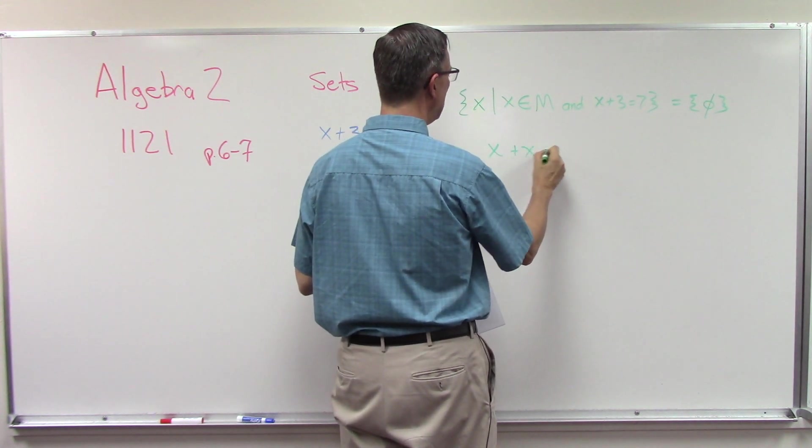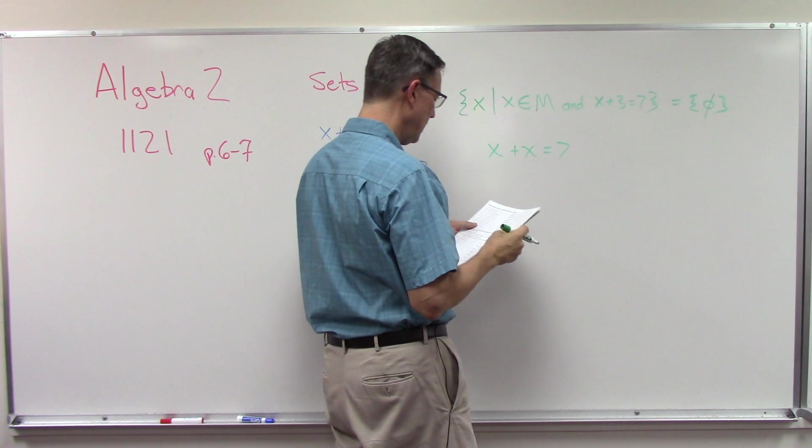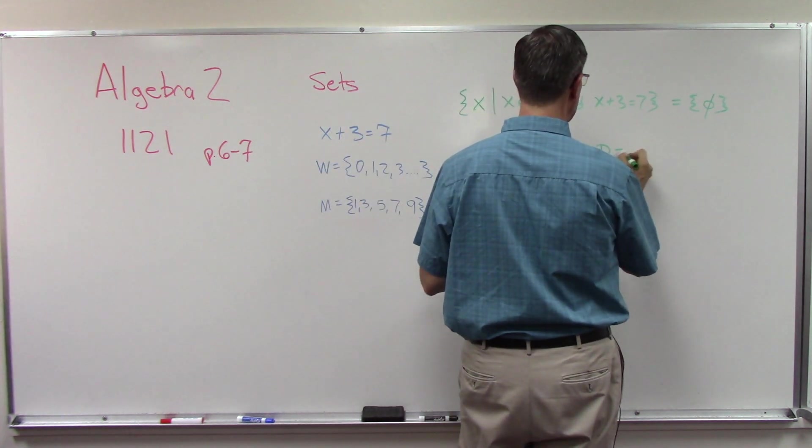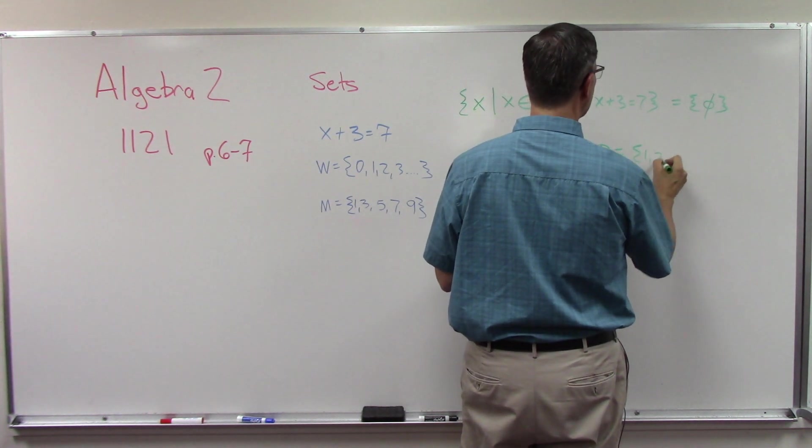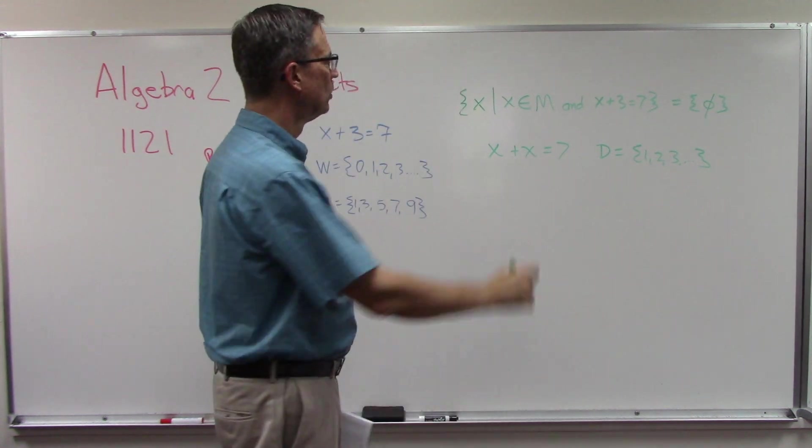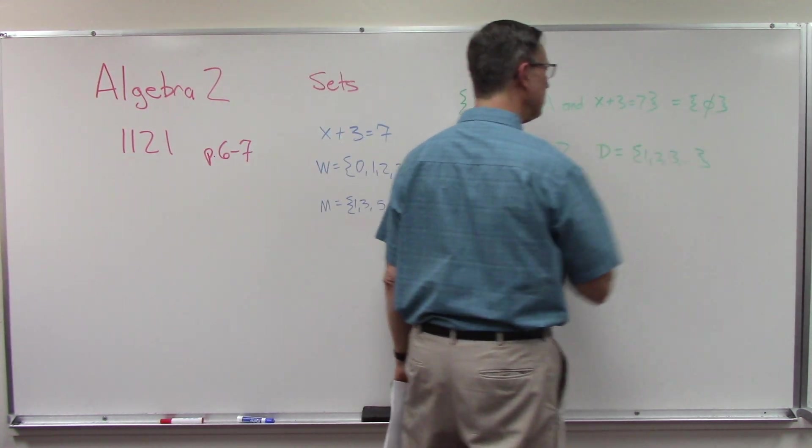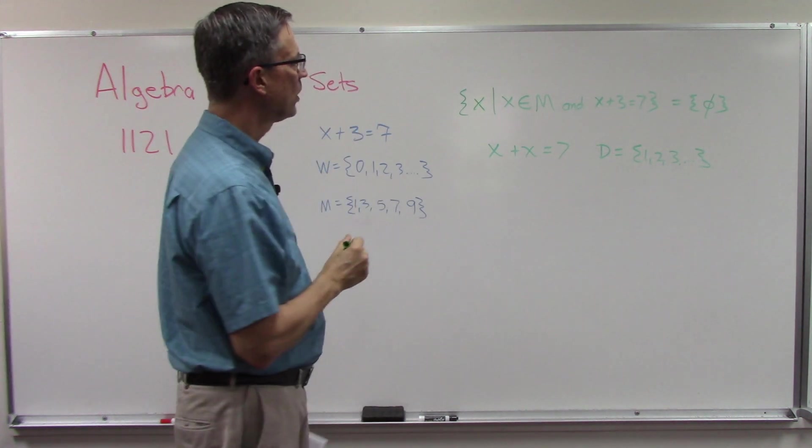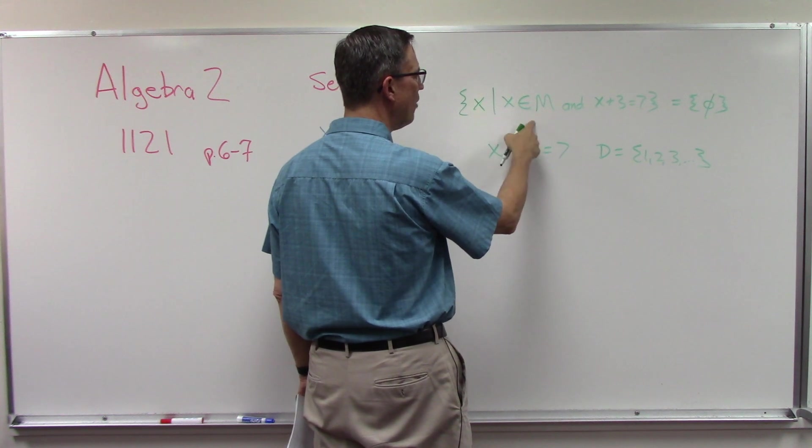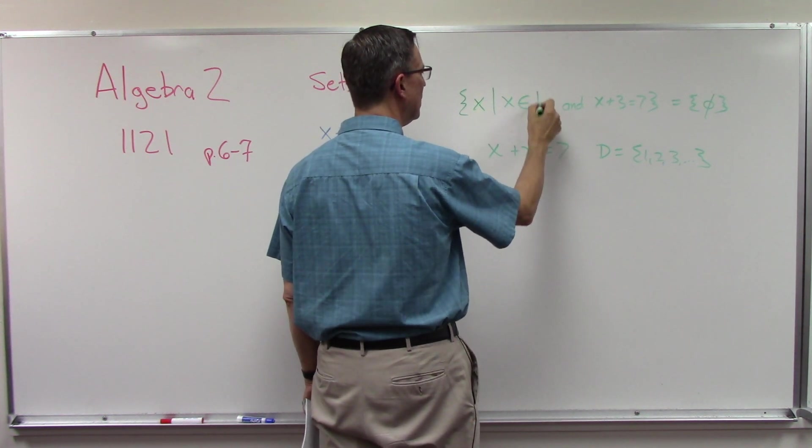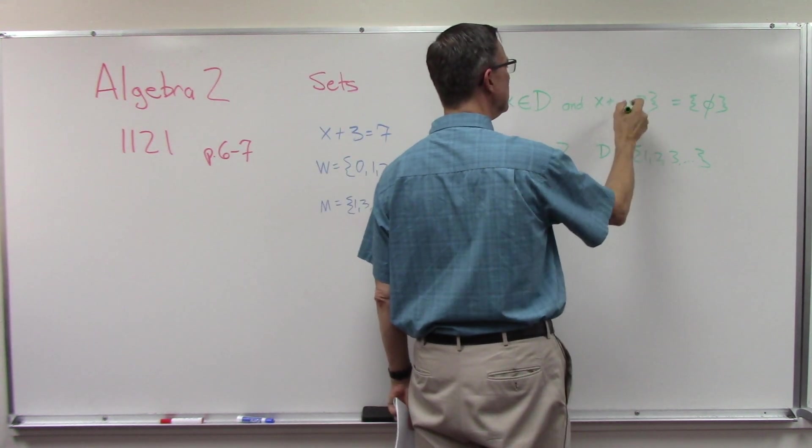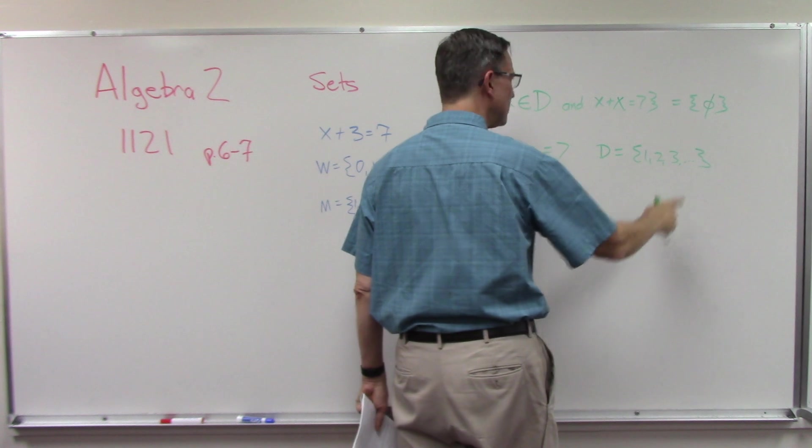Let's look at question number nine on page seven and they want us to make a statement like that. And they have two things here. They tell us that x plus x equals seven, and set D equals one, two, three dot dot dot. And they want us to write this statement and then solve it and come up with an answer. So let's walk through first of all how we would do this.